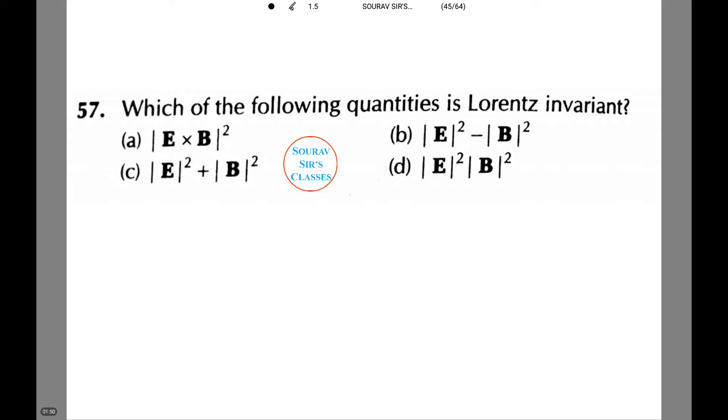Which of the following quantities is Lorentz invariant among the following options a, b, c and d? The quantity E square minus B square is the Lorentz invariant, which is option number b.